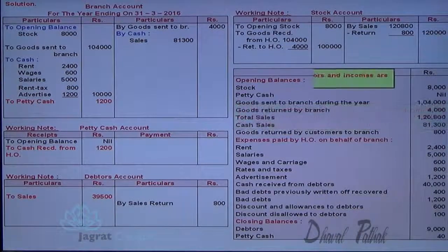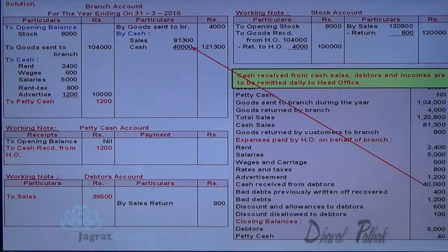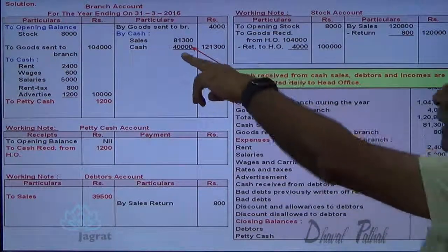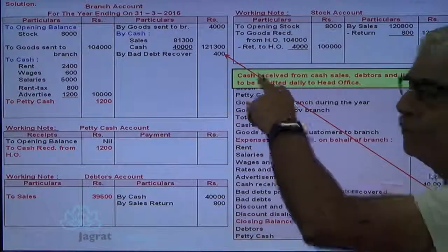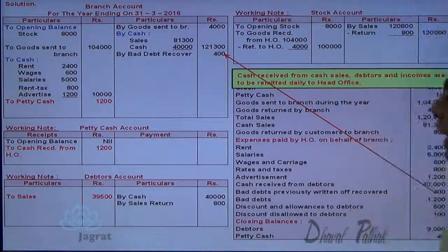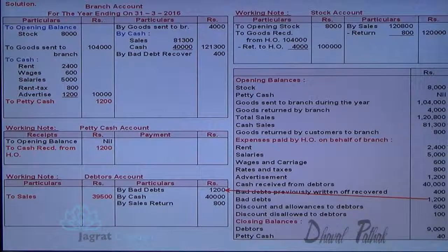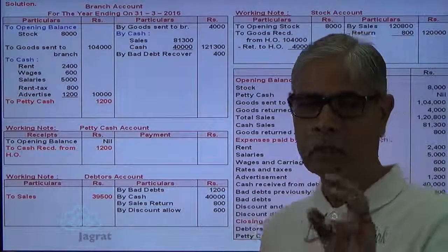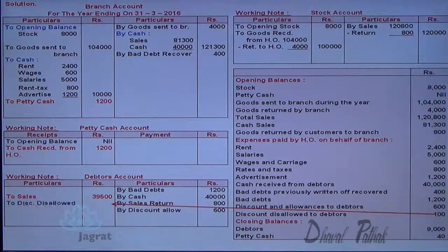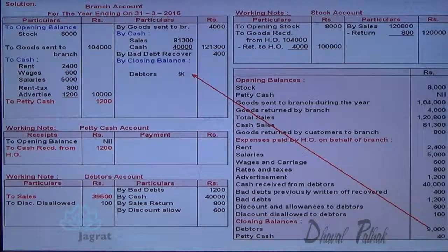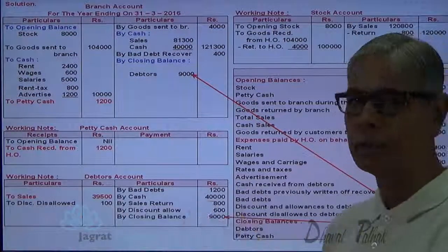All incomes are remitted by branch to head office. Bad debt recoveries are income — so cash account debit to branch account credit. Cash collections from debtors will also appear in the debtors account. Bad debt recovery is remitted — cash account debit to branch account credit. Bad debts are recorded on the credit side of debtors account in the working note. Discount allowed to debtors is recorded normally; discount disallowed will be debited to debtors account on the opposite side. Closing balance of debtors is absorbed by head office — debtors account debit to branch account, and the same is recorded as closing balance in the working note.